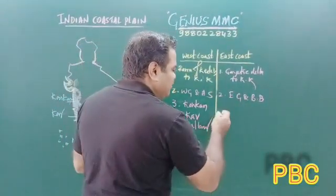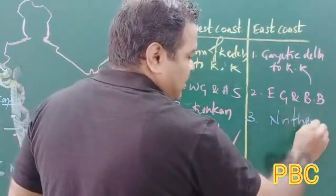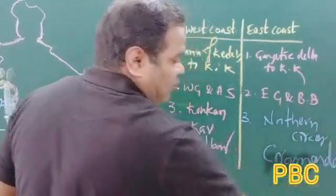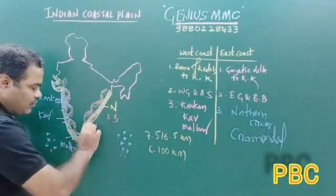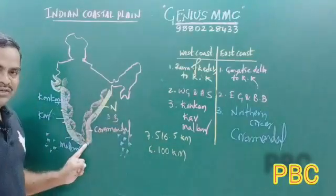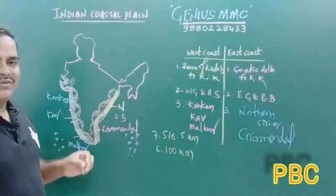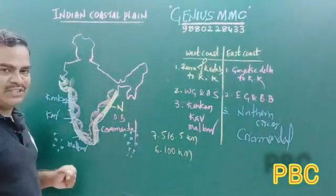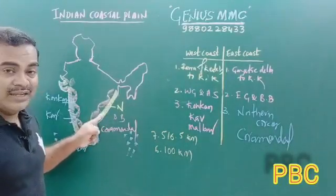The East coastal plain is divided into two divisions: Northern Sarkars in the north and Coromandel coast in the south. The Eastern coast is famous for lagoons, which are saltwater lakes. The three important saltwater lakes mentioned in the textbook are Chilika Lake in Odisha, Pulikat Lake in Tamil Nadu, and Kolleru Lake in Andhra Pradesh.